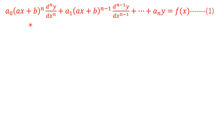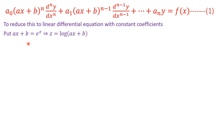Now we'll see how to convert this to a linear differential equation with constant coefficients. This is Cauchy's differential equation; Legendre's differential equation is not very different — it is a special case of this, so we will discuss only this more general case. To convert it, the first step is to use the substitution: ax + b = e^z.